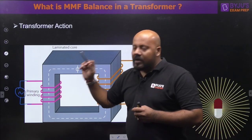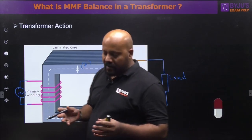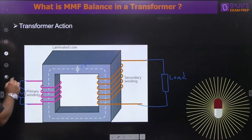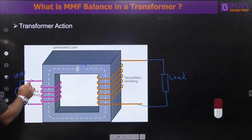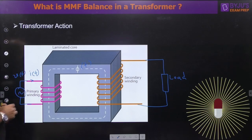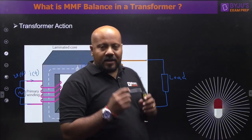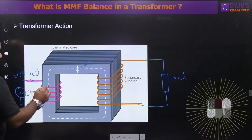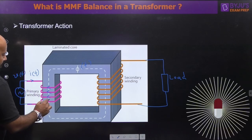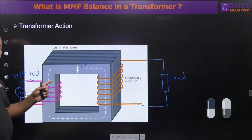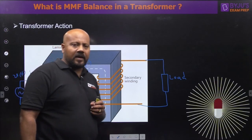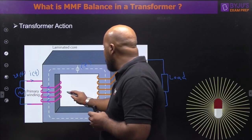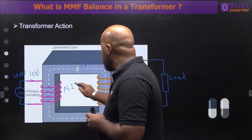Once you apply voltage at the primary winding, the applied voltage V(t) gives rise to a time-dependent AC current I(t), which circulates in the primary winding. This current, when it flows through the primary winding with N1 turns, gives rise to the MMF of the primary winding, which we call N1*I1.